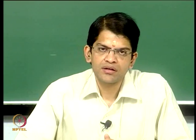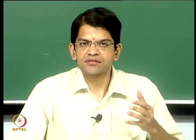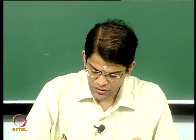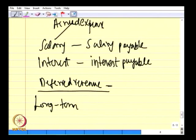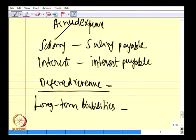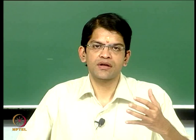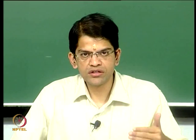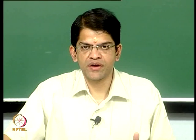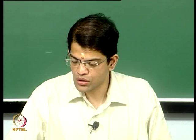Just as we have current assets and fixed assets, we have current liabilities and long-term liabilities. Long-term liabilities are predominantly long-term debt or the company's own bonds that they issue. This means I borrow money from a bank with a repayment period of 8 or 10 years — since it is long-term, this stands as long-term debt. Or I raise money by selling corporate bonds with a duration of 5 or 10 years. These are long-term debts.